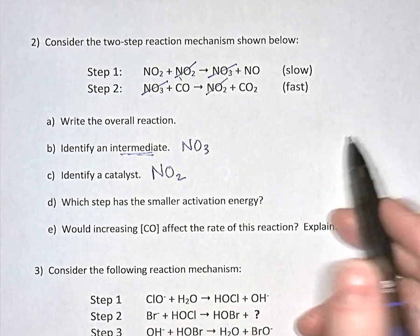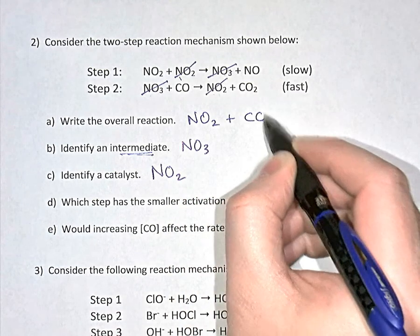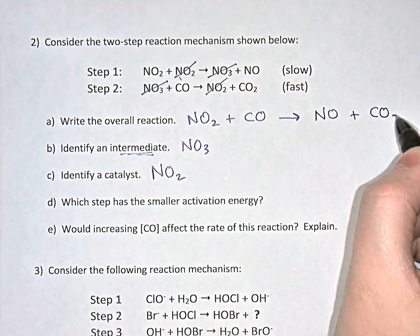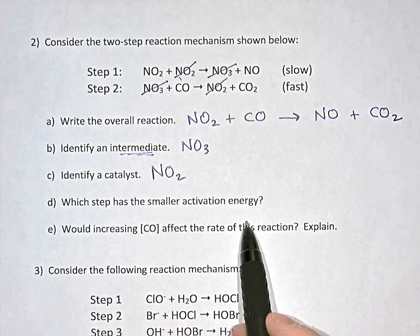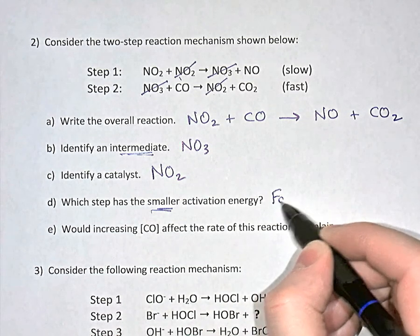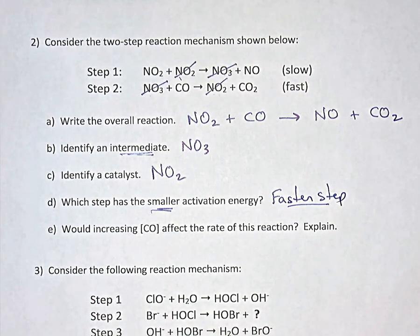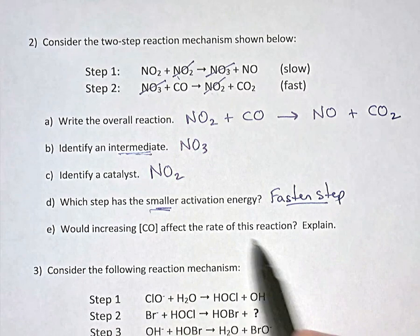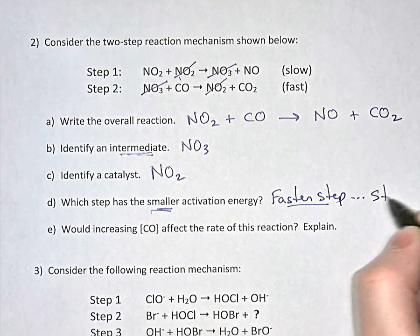Anything not cancelled out gives us the overall reaction: NO2 reacts with carbon monoxide CO, producing NO and CO2. Which step has the smaller activation energy? The smaller EA means it is the faster step — more particles have sufficient energy, so the reaction proceeds faster. Looking at the mechanism, step two was labeled fast, so step two has the smaller activation energy.